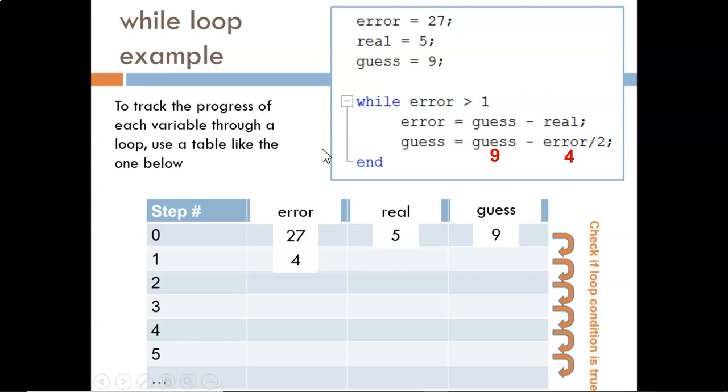So, the next command becomes guess equals 9 minus 4 divided by 2. This returns a 7, and the 7 replaces the 9 as the value of guess. Does real change at all in the loop? No, so it still equals 5, and it will equal 5 no matter how many times we run the loop. Okay, we reach the end statement, which means we jump back to the top of the loop and evaluate the condition. Is error 4 greater than 1? Yes, it is, so we enter the loop again.